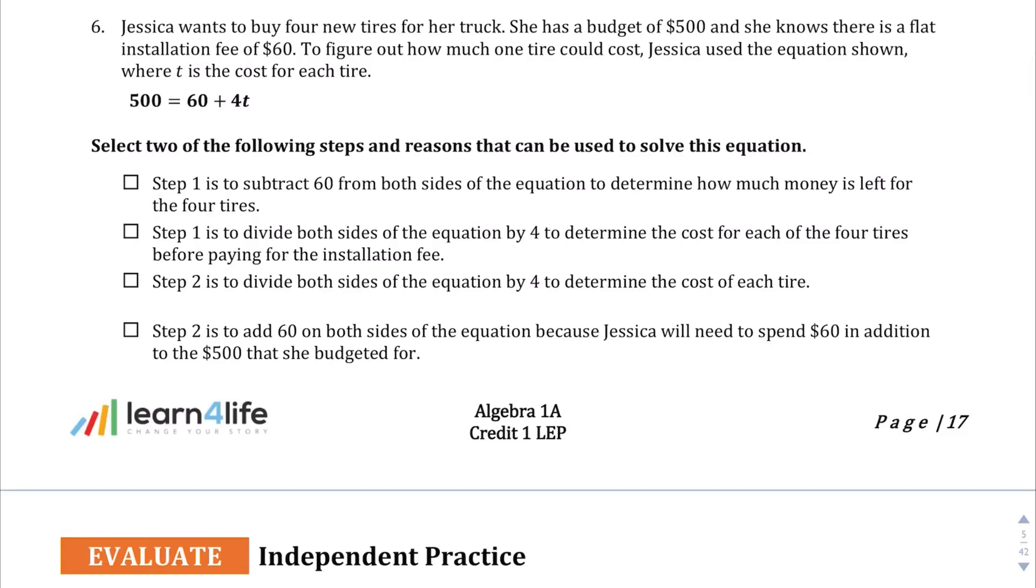Question number 6. Jessica wants to buy 4 new tires for her truck. She has a budget of $500. And she knows that there's a flat installation fee of $60. So no matter what, she has to pay $60. And she has to buy 4 tires. So to figure out how much one tire could cost, Jessica used the equation shown where T is the cost for each tire. So you're going to solve for T using that equation.